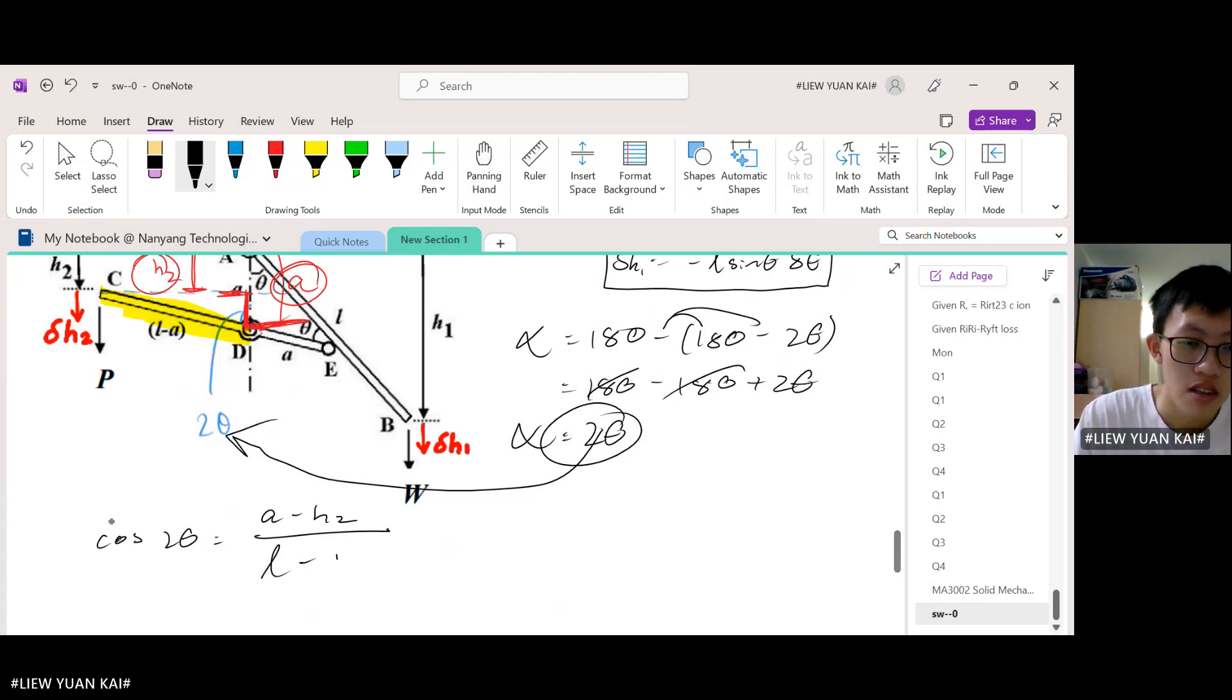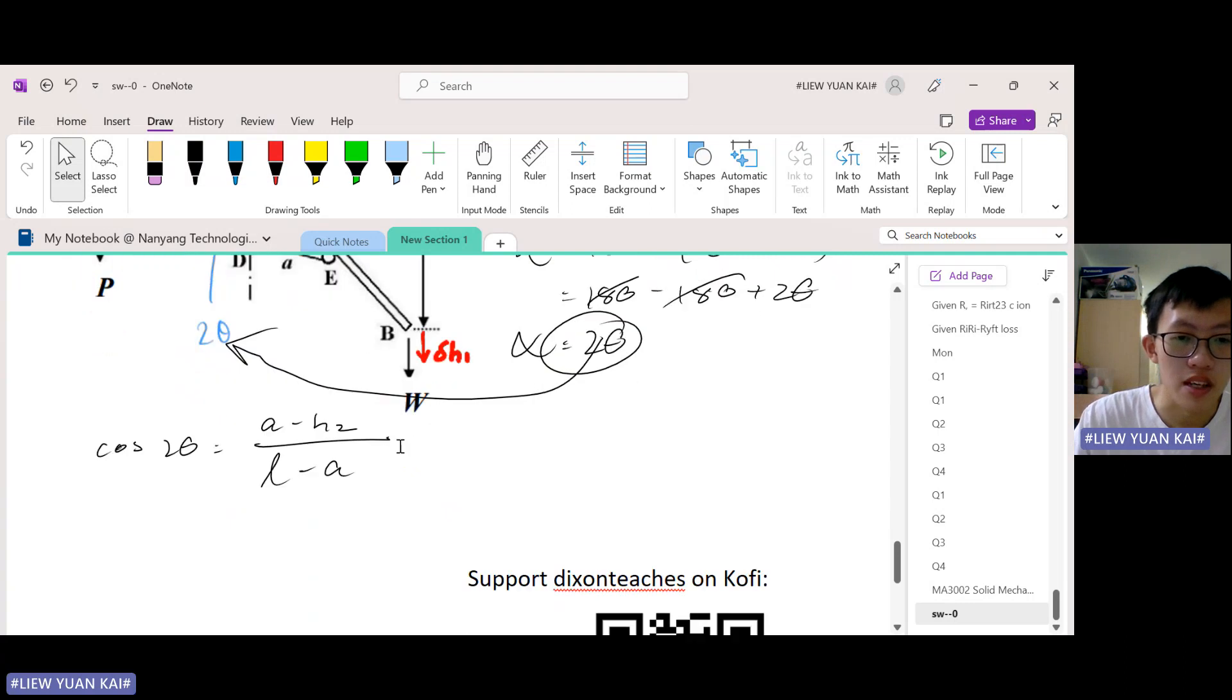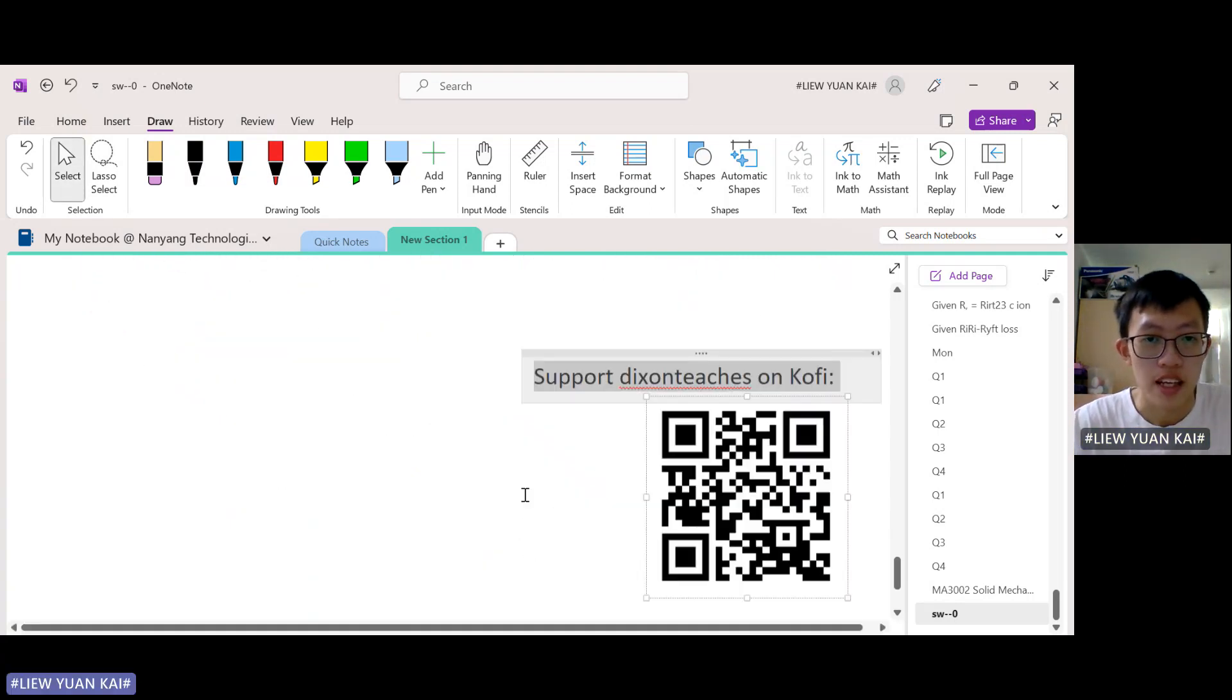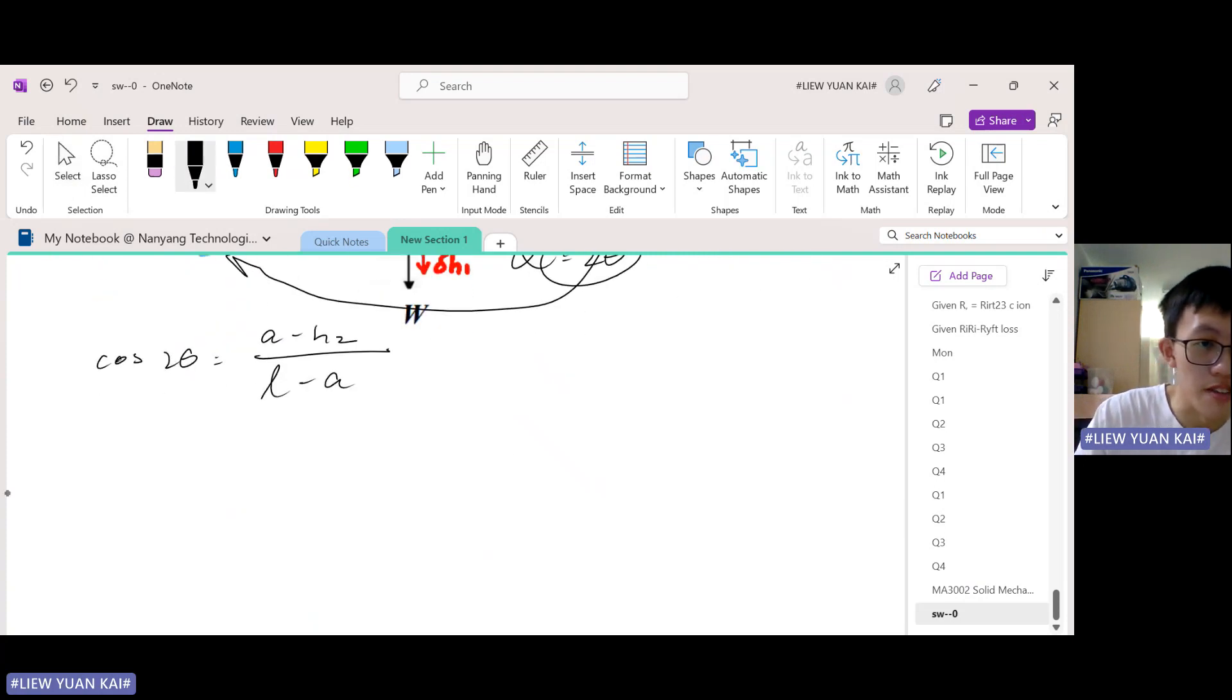We want to make h2 the subject, so let's move everything over. Making h2 the subject, it is A minus L cosine 2 theta.